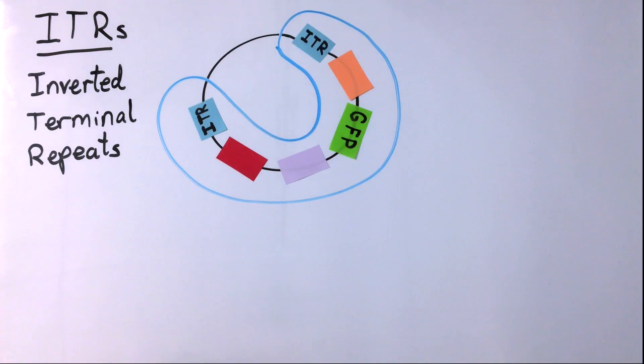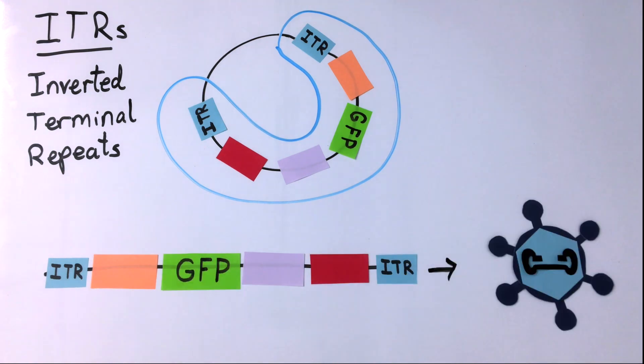The ITRs and the region between them are what gets packaged in an AAV molecule. Everything outside of this region is your plasmid backbone and does not make it into the AAV vector.